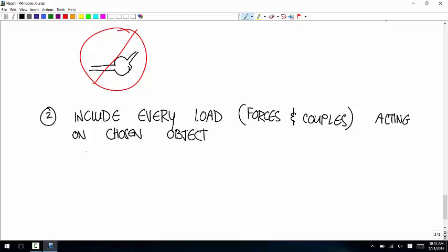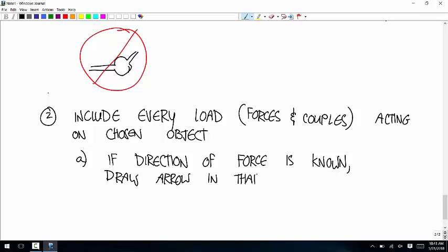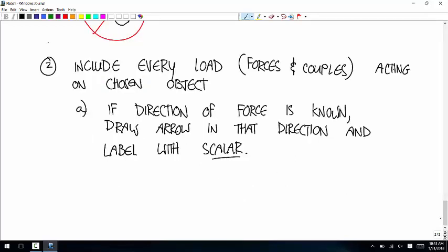So this is everyone acting on the chosen object. And sometimes, you know, the direction of these loads, sometimes you don't. If the direction is known. Let's see. And. Draw an arrow in that direction. And label it with a scaler. That can be a number or a constant or a variable, but it has to be a scaler. You don't, you wouldn't draw an arrow and then put a vector variable there. Because the arrow gives the direction, the only other thing you need, if you know the direction, is the magnitude. And then.